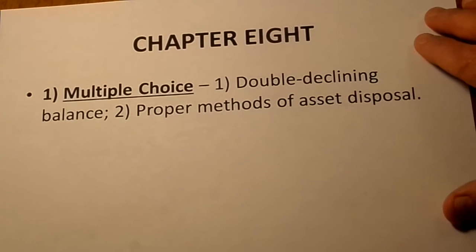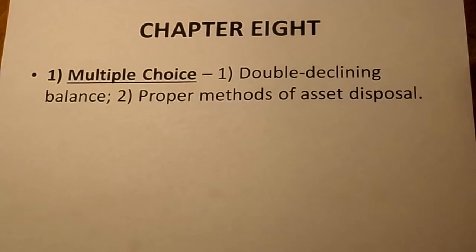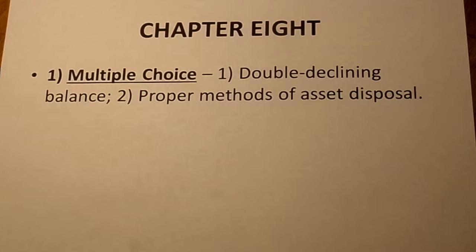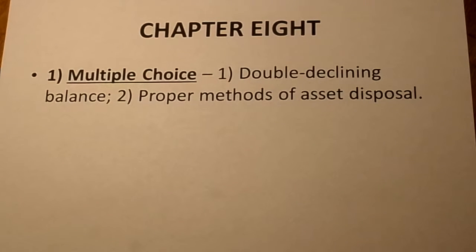Not much from Chapter 8 on the test. Chapter 8 dealt with long-term assets, but there's one multiple choice question where you have to calculate double declining balance. Also a question that talks about which one is not a proper method of disposing of assets. In the section that deals with disposal of assets, there are three methods listed that are acceptable, and this would be the one that's not among those three.